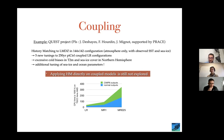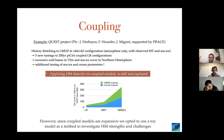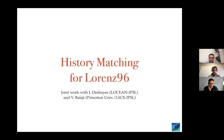Instead of trying history matching directly on big coupled models, I want to first have a toy model where I can try different history matching techniques. This is a figure showing CPU time for running coupled models — the message is I won't start an adventure with coupled models without a toy model to experiment on. That's why I moved to the Lorenz 96 model, which is a classic model well-known to many people here.